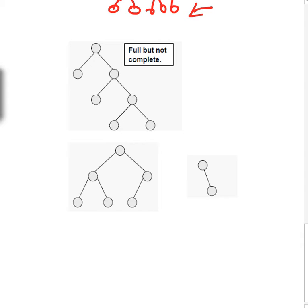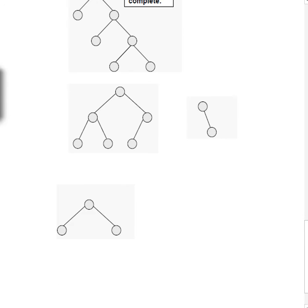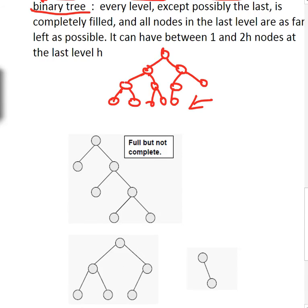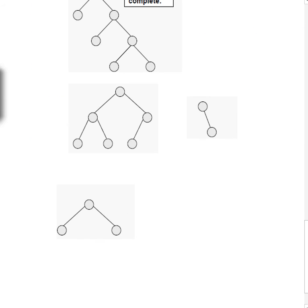Consider another example: a tree is not full if any node has degree one. It is not complete or almost complete if nodes are right-justified — something missing on the left side is not allowed; we need missing nodes only on the right. A tree that is full and has all leaves at the same level is both a full binary tree and a complete (or perfect) binary tree.